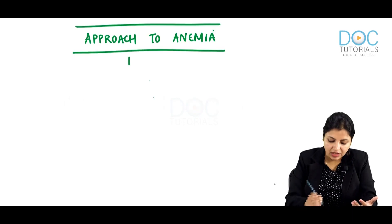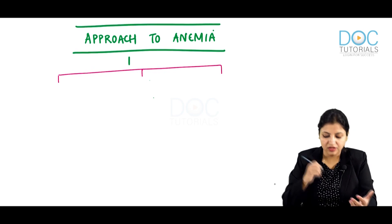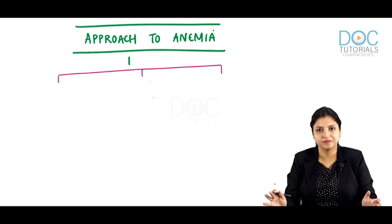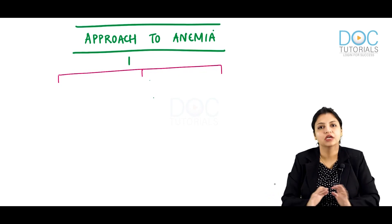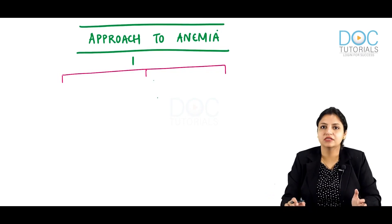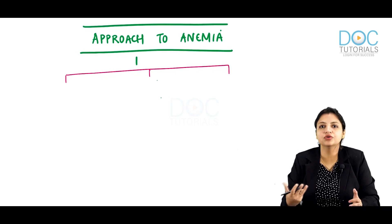For understanding the approach to anemia, you should understand that we can classify anemia according to various classifications — according to changes in size, according to cause, according to etiology. I prefer to classify anemias into three basic types so that we can understand and answer the majority of questions.